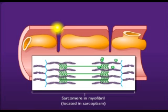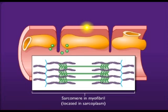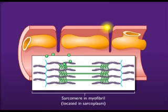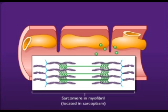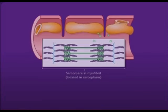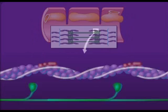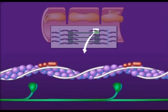The voltage-gated calcium ion channels open, resulting in an increase in the permeability of the sarcoplasmic reticulum to calcium ions. Calcium ions then diffuse from the sarcoplasmic reticulum into the sarcoplasm.